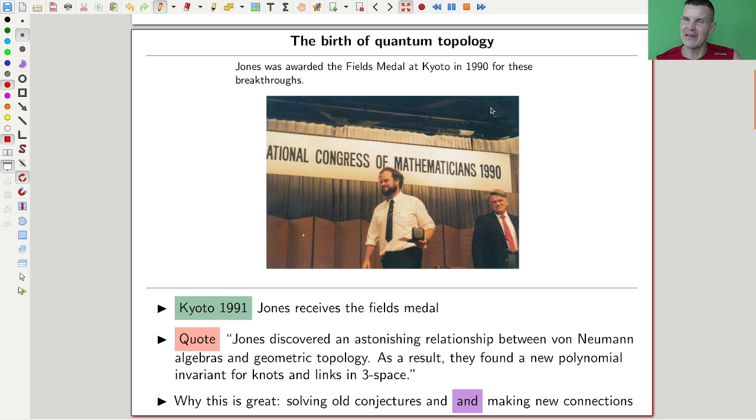The birth of quantum topology is roughly in 1985, with Vaughan Jones discovering one of the fantastic discoveries, what is called the Jones polynomial nowadays. A little bit later, like five years later, there was a Congress of Mathematics in Kyoto, and one of the Fields Medalists was Vaughan Jones.